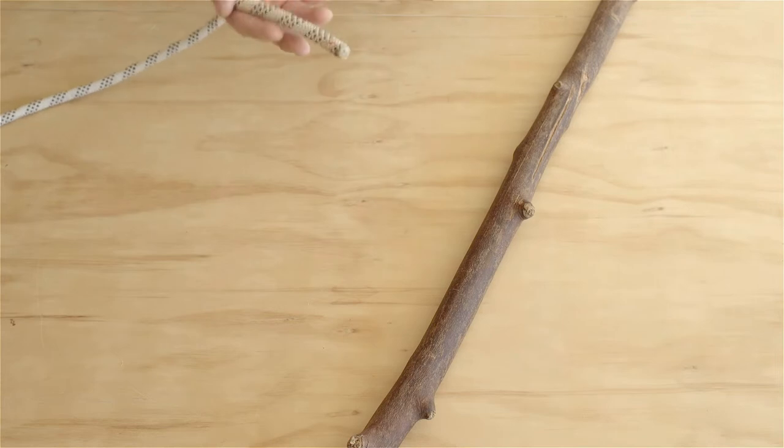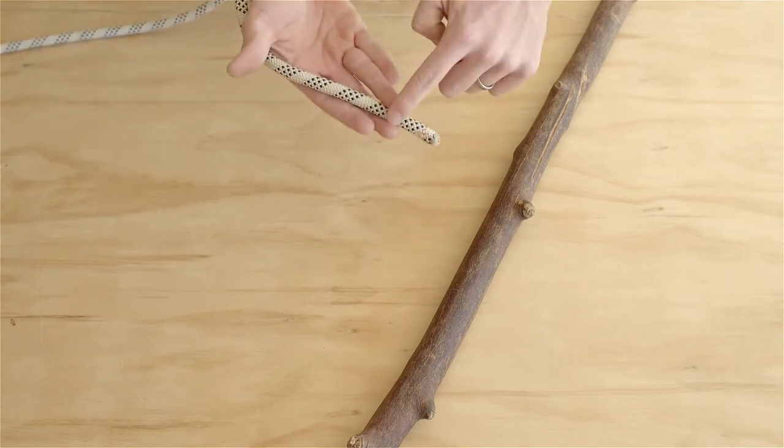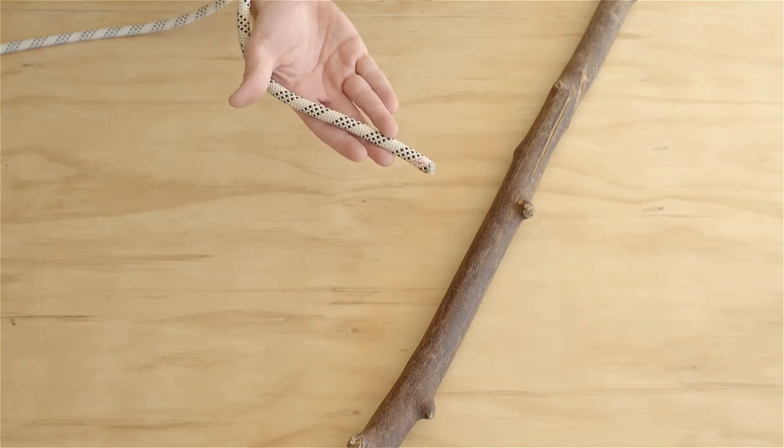To tie the clove hitch, pick the rope up in your hand like this, running behind the thumb and held with your second and third fingers.